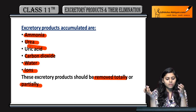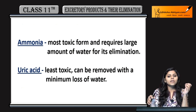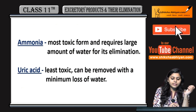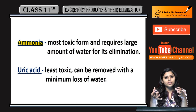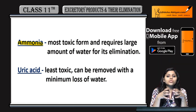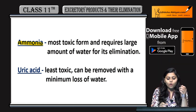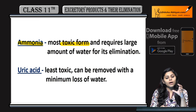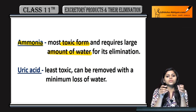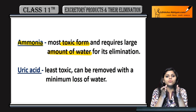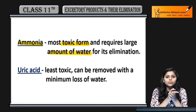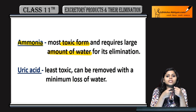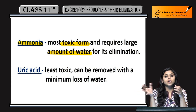Ammonia is the most toxic form of excretory product and requires a large amount of water for its elimination. It is very important that toxic materials be removed from the body.